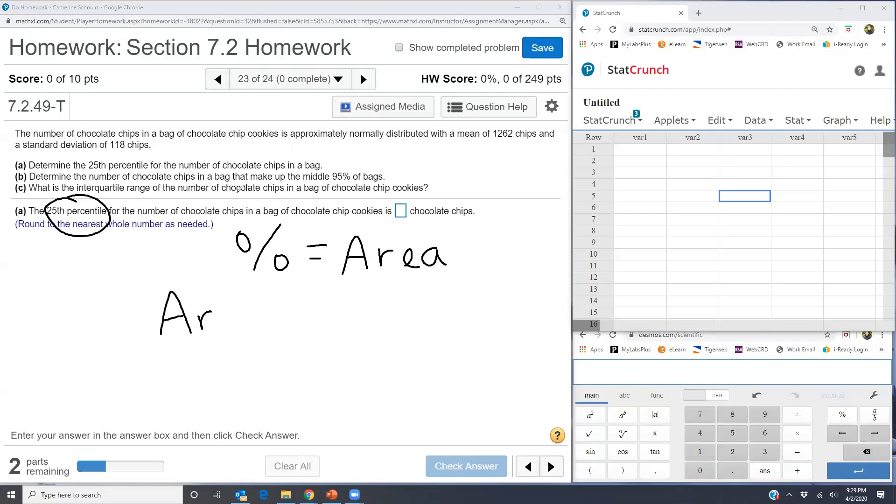So in this problem, we have area to the left is 0.25. Now the other thing we know, we know it's normally distributed.